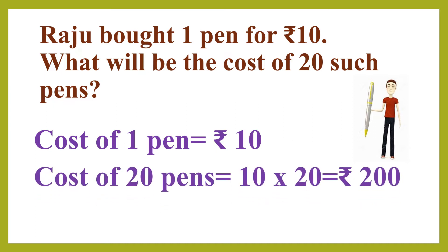Next step: cost of 20 pens — 20 times 10, that means 10 into 20. Remember how you did multiplication of numbers ending in 0. Thus you got the answer: 200 rupees.